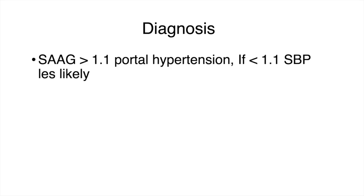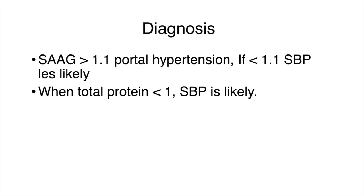The next step after obtaining ascitic fluid is to calculate the SAAG — the serum albumin-ascites gradient. We subtract the albumin in the ascitic fluid from the serum albumin. If the value is greater than 1.1, this indicates portal hypertension and SBP is more likely. If it's less than 1.1, SBP is less likely. Additionally, if the total protein is less than 1, SBP is more likely.